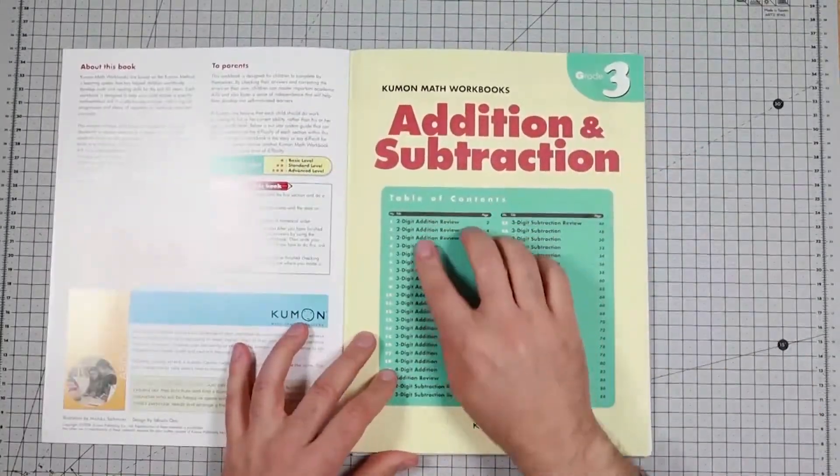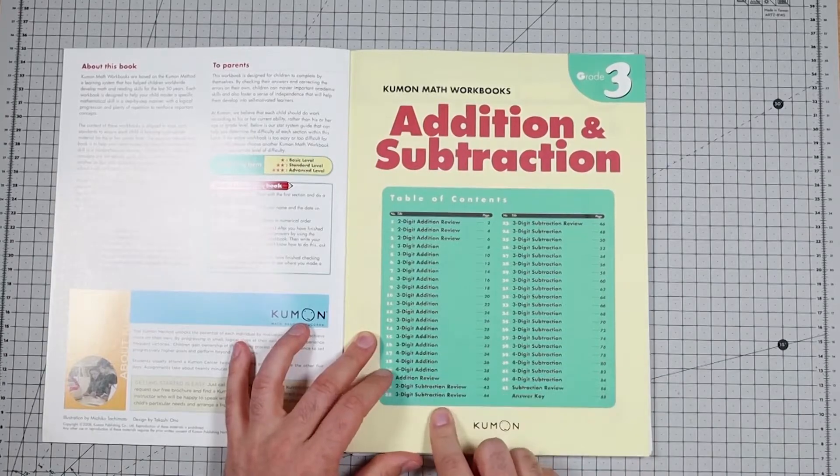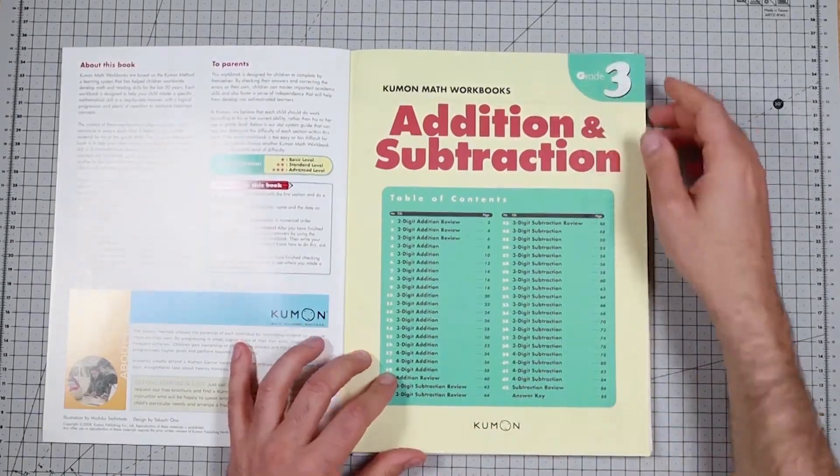What does it cover? Two digit addition, three digit addition, four digit addition, and the same for subtraction.